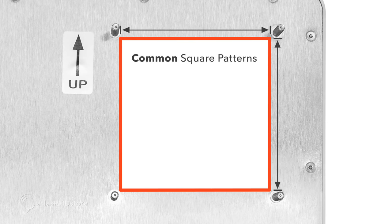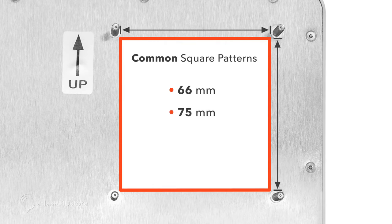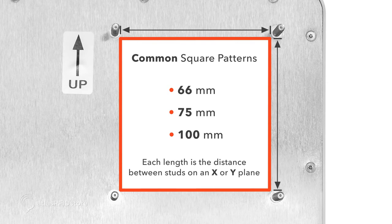The most common square patterns for RFID antennas are 66 millimeters, 75 millimeters, and 100 millimeters, where each length is the distance between studs on an X or Y plane.